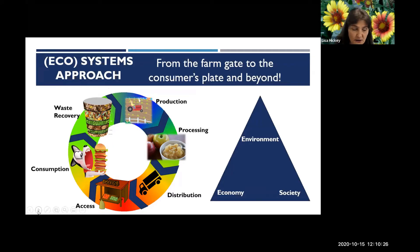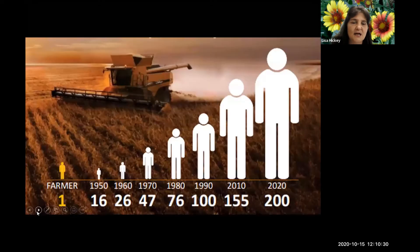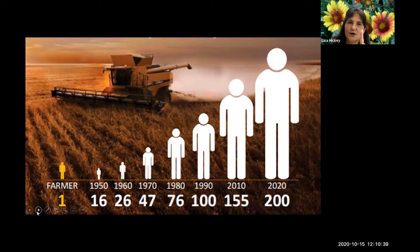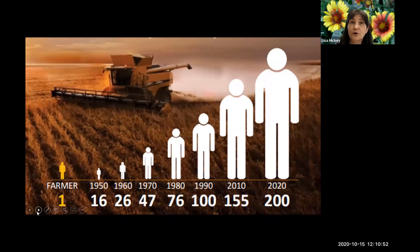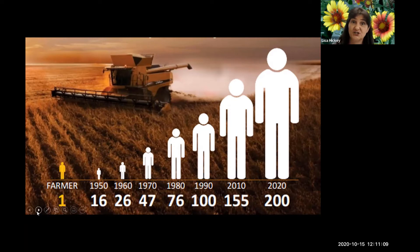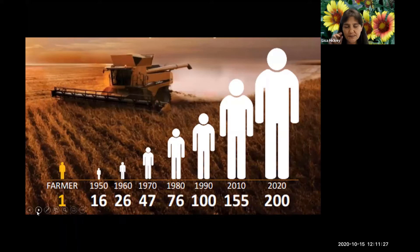Back in 1950, one farmer fed 16 people. Today in 2020, one farmer feeds 200 people. You can see the amount of growth — we've got to figure something out regarding sustainability. Looking forward, what are our population projections going to look like? Even in Florida, we have a huge agricultural community, but as populations increase, what does that mean for agriculture when we're closing in on farmland?